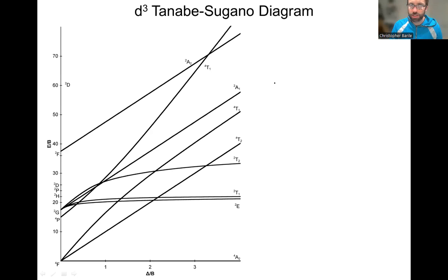Okay, so in this video we are going to discuss applications of the D3 Tanabe-Sugano diagram. In particular, we're going to go over the number of spin-allowed transitions for complexes that are relevant to this diagram. Those two types of complexes are D3 complexes in octahedral symmetry, and also D10 minus N, so D10 minus 3, D7 for tetrahedral symmetry. So if you have one of these two types of complexes, this is when you want to use this D3 Tanabe-Sugano diagram.